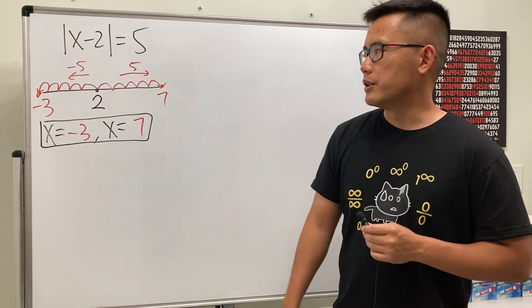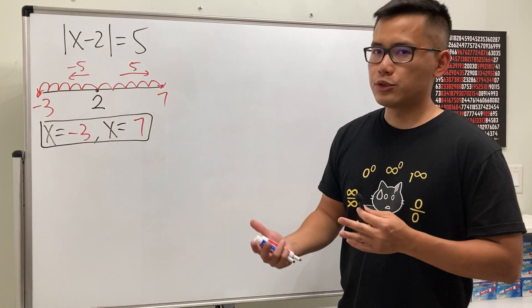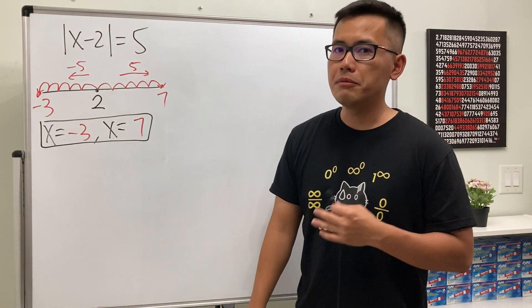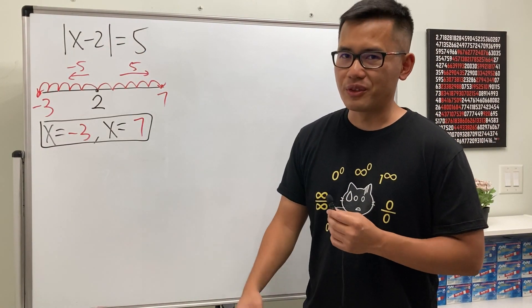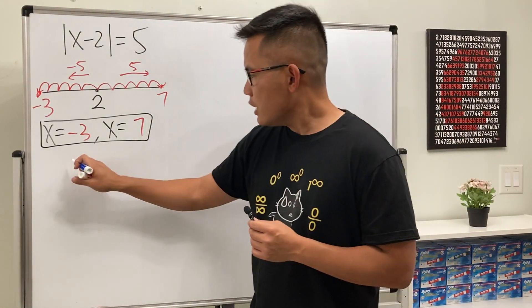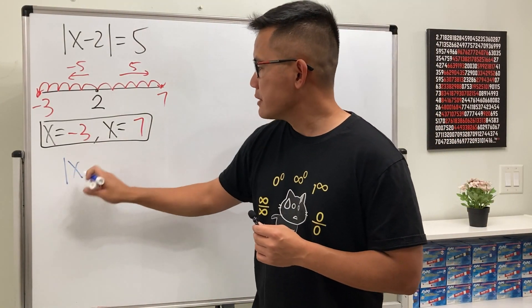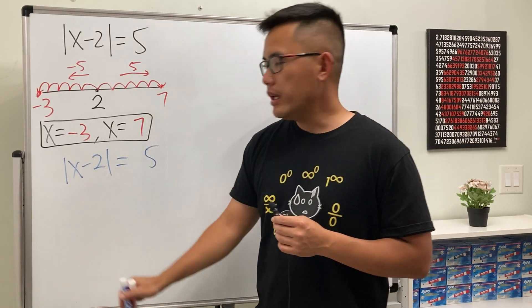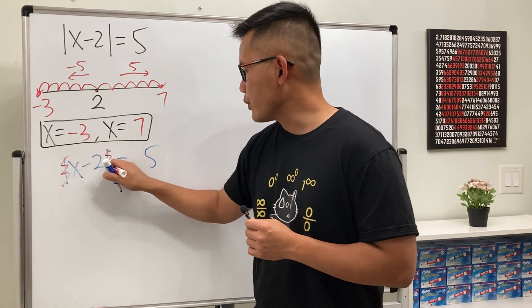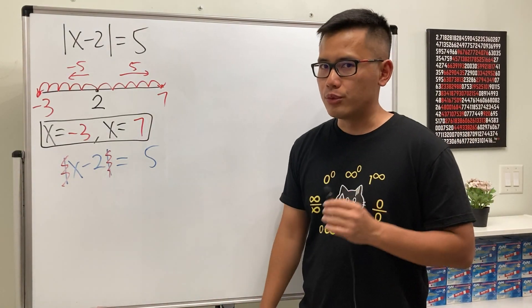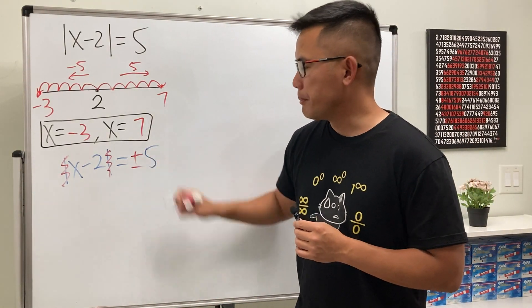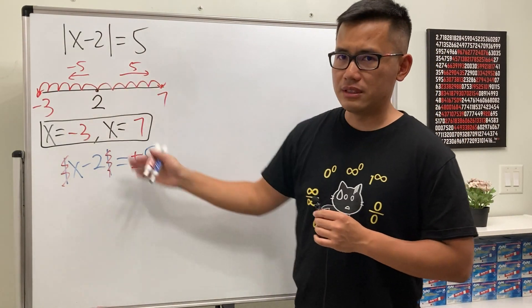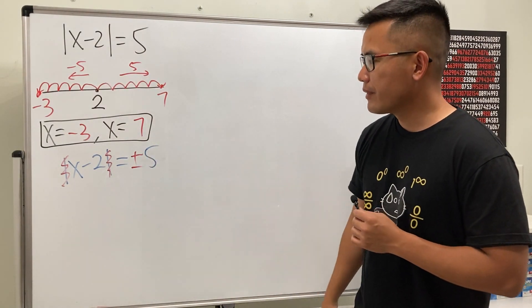That's the first way. The second way is useful when you don't like drawing pictures — and when equations get complicated, the graphical method won't work as nicely. Once the absolute value is isolated, we get rid of the absolute value signs but put a plus or minus on the right-hand side. We've already seen why — it's because of the two directions.